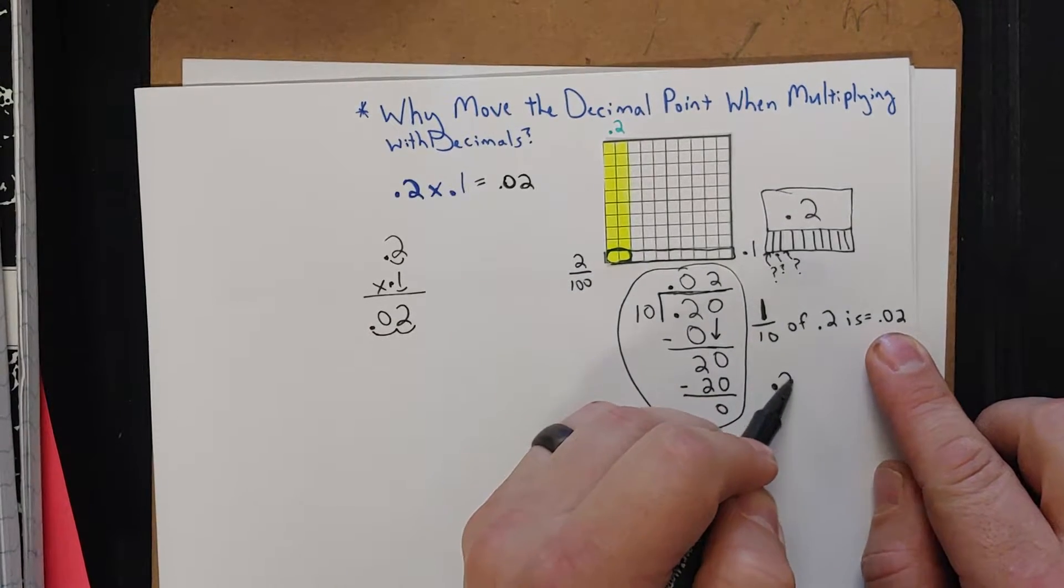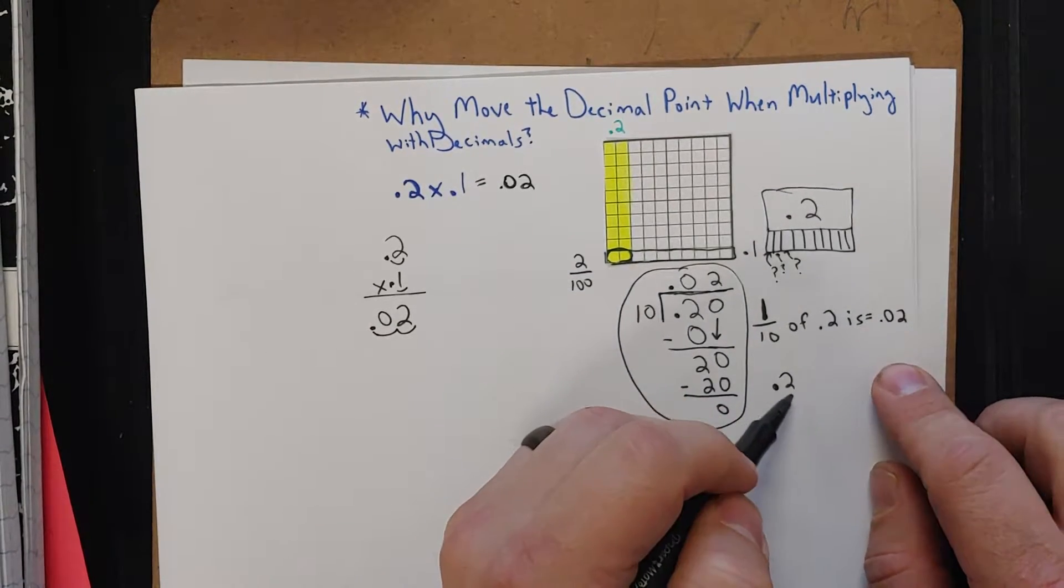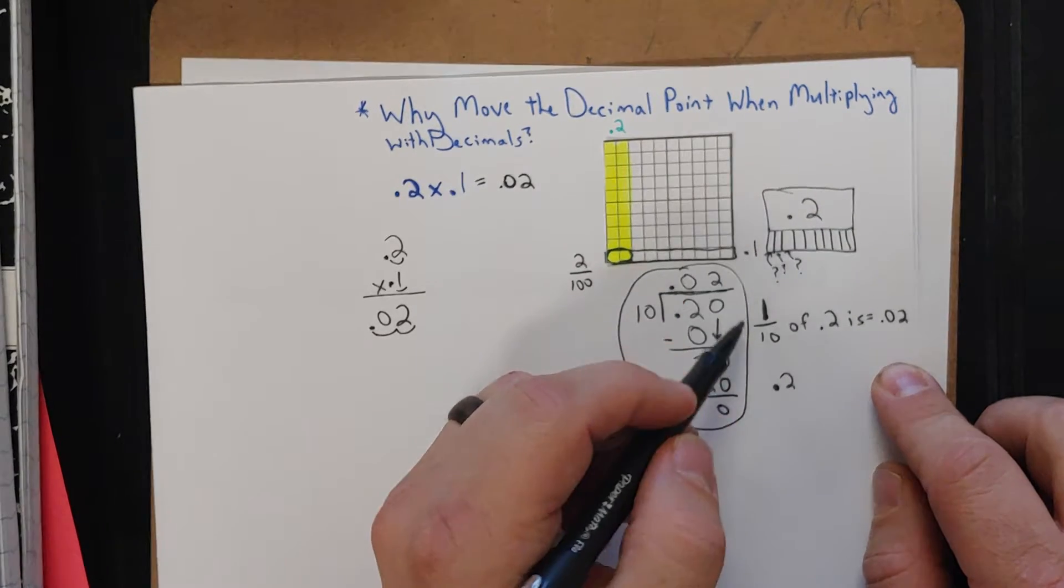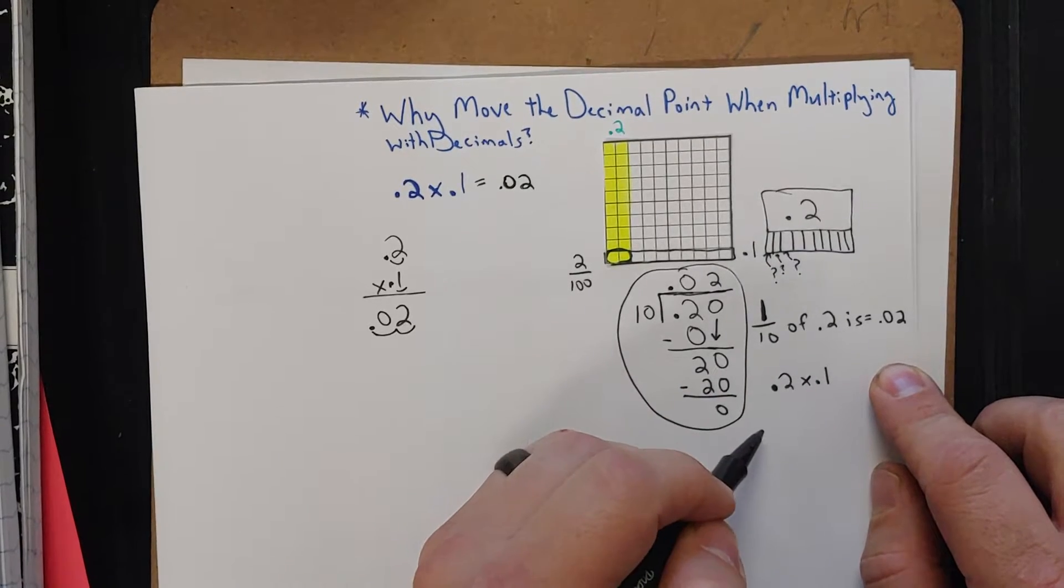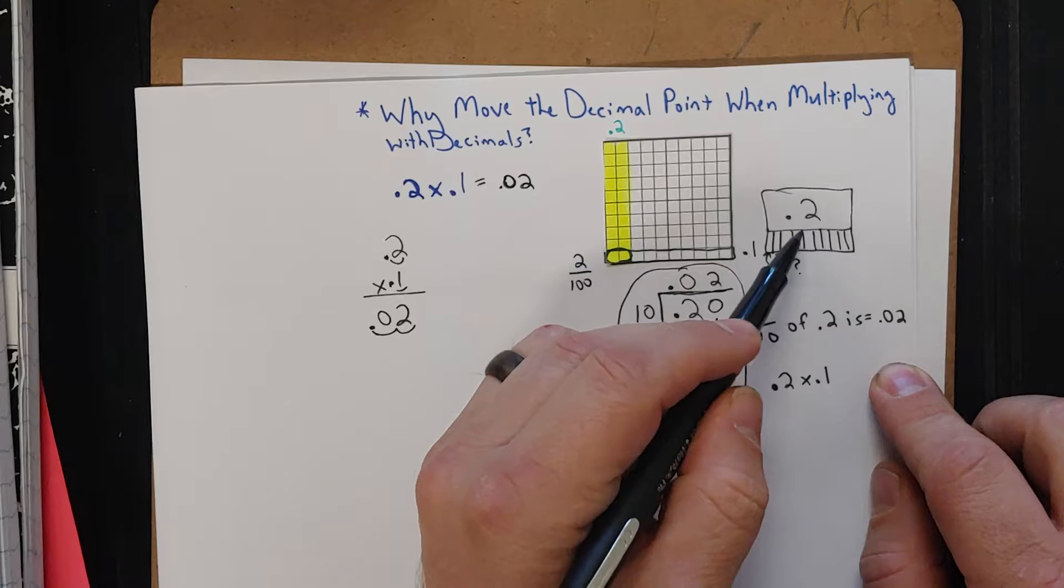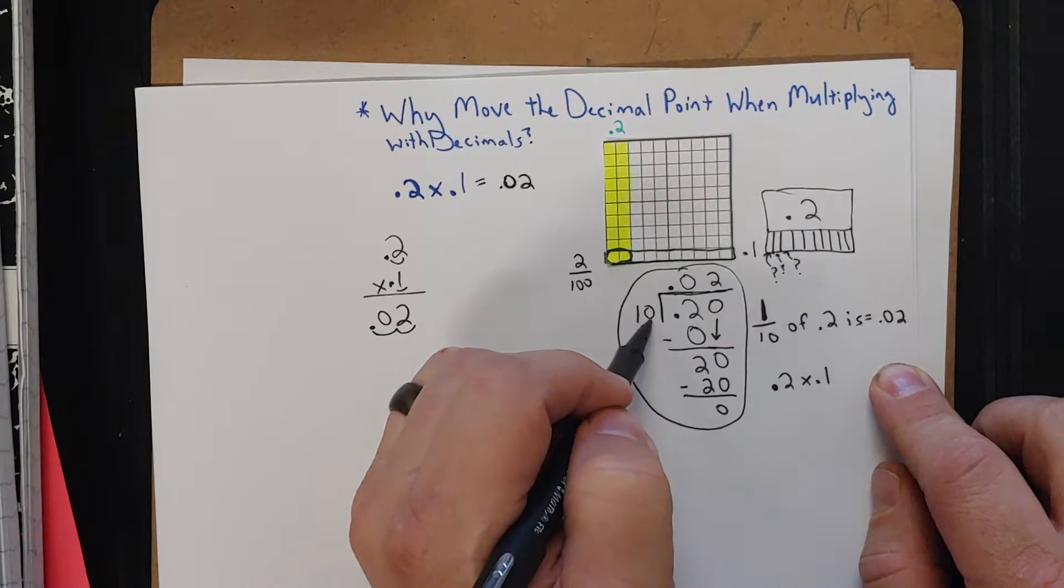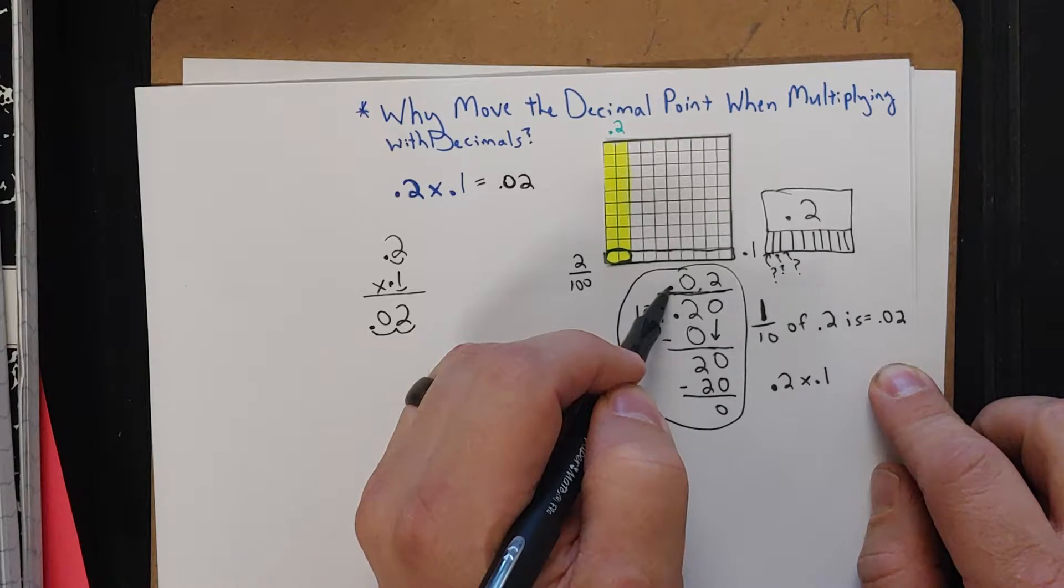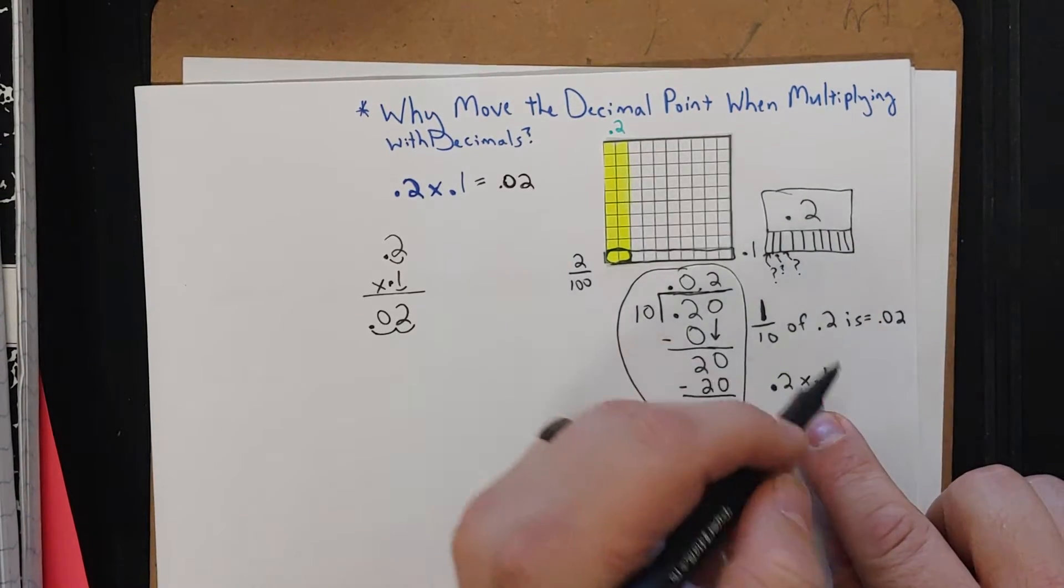So remember we started with 2 tenths. And if we're going to take a tenth, we're multiplying it by another tenth. That would be 1 decimal. What we're doing, think about the difference. If I went from 2 tenths to 2 hundredths, what I did is I divided by 10. When I divided by 10, I moved that decimal over essentially, right?